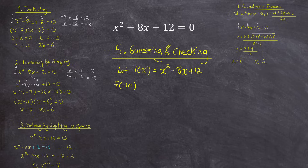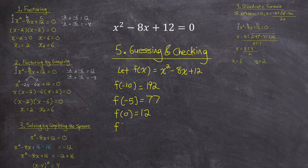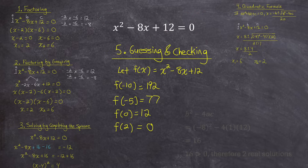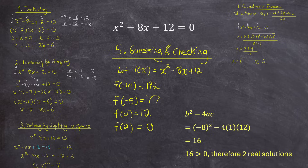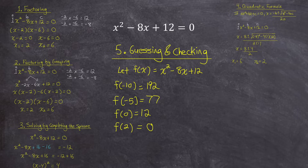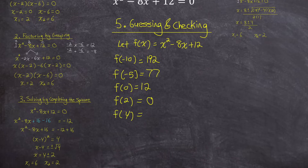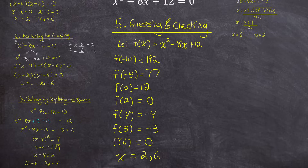Starting with f of negative 10, that equals 192 — far from 0. f of negative 5 is 77 — closer but not there. f of 0 is 12 — even closer. f of 2 is 0 — that's one answer! This quadratic has two real solutions; we can verify that by checking the discriminant b squared minus 4ac, which is positive 16. Continuing: f of 4 equals negative 4, f of 5 equals negative 3, and f of 6 equals 0 — that's the second answer. So the solutions are x equals 2 and x equals 6.